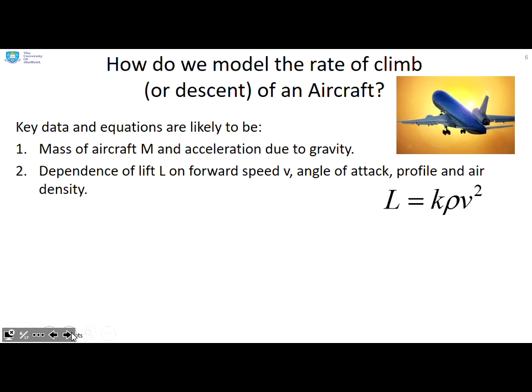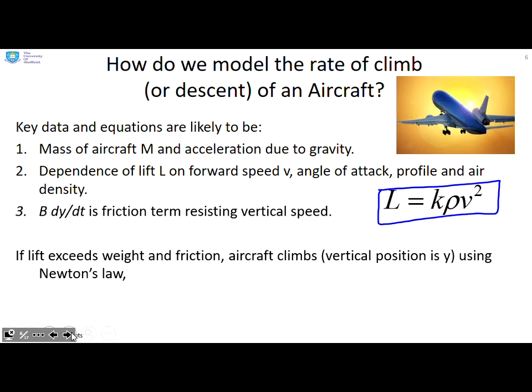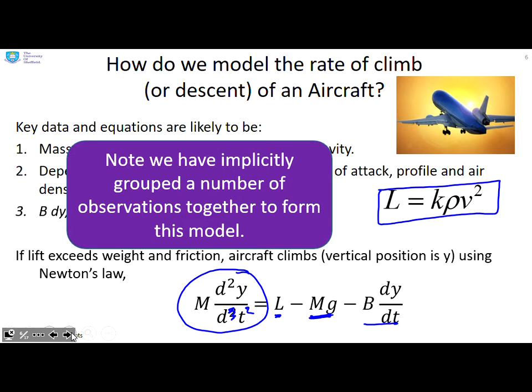Here's an example. How do we model the rate of climb or descent of an aircraft? Key data and equations are likely to be things like what's the mass of the aircraft and acceleration due to gravity? What's the dependence of lift on forward speed V, angle of attack, profile and air density? I'm going to give you an equation that lift is some constant times the air density times velocity squared. What's the friction term which resists vertical speed? Here we're just going to call it B dy/dt, where y is the vertical displacement. If lift exceeds weight and friction together, the aircraft will climb. Using Newton's law, we have mass times acceleration, mass times d²y/dt². That should be dt squared equals lift L minus mass times acceleration due to gravity minus friction. You see, what have we done here? We've grouped a number of observations together to form this model.